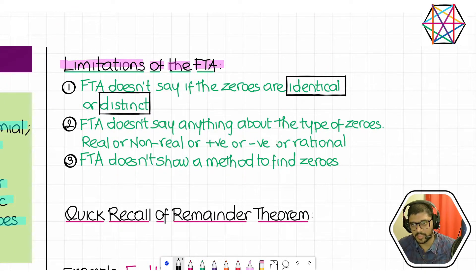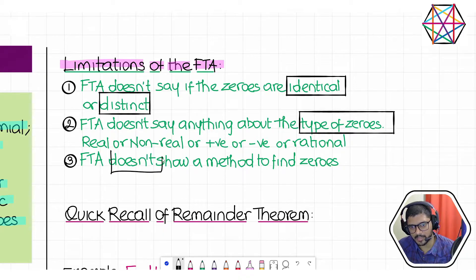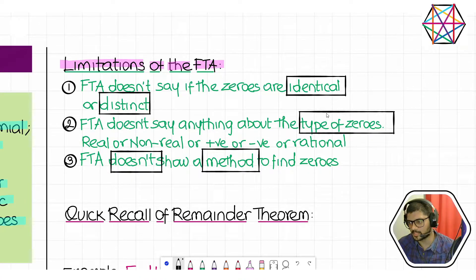So FTA doesn't say whether the zeros are identical or distinct, doesn't say anything about what kind of zeros they are, and doesn't show us a method to find the zeros. It just tells you how many zeros there are. That's it.